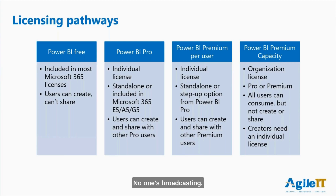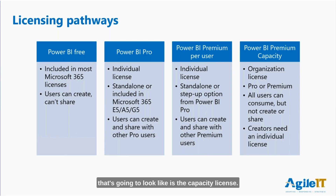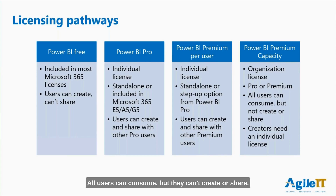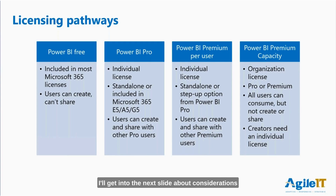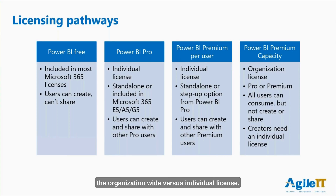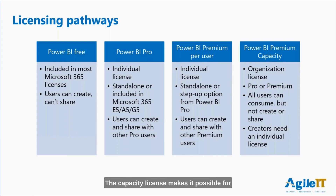If you are interested in a broadcasting version, what that's going to look like is the capacity license — that's the organization-wide license. It can be a Pro or a Premium license, and all users can consume but they can't create or share. So if you know your entire organization needs to see a report that someone has made, this could be a good option. I'll get into the next slide about considerations of when it makes sense to go organization-wide versus individual license. Keep in mind that creators would still need to have an individual license to create that content — the capacity license makes it possible for everyone to consume it, but creators will still need to be licensed individually.